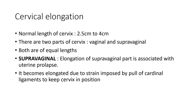The normal length of the cervix is around 2.5 to 4 centimeters. There are two parts of the cervix: vaginal and supra-vaginal, and both parts are of equal lengths. Elongation of the supra-vaginal part is associated with uterine prolapse.